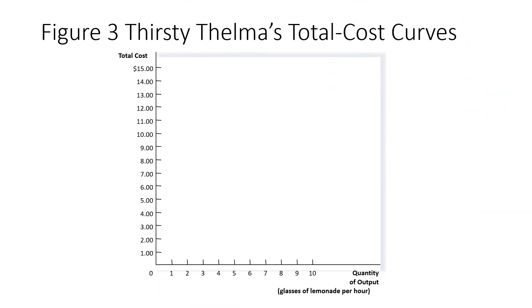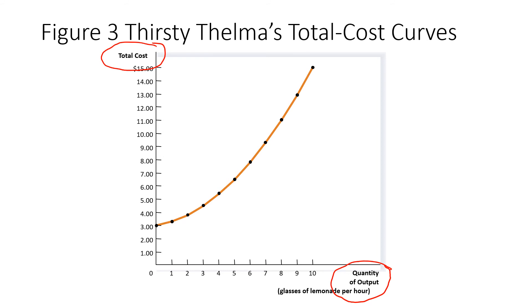Let us graph what we have learned. On the y-axis we have total cost and on the x-axis we have quantity. Plotting all these points, we get an upward sloping line — total cost increases as we produce more quantity. The reason is that the marginal productivity of labor is declining, so the cost for each extra unit gets higher and higher.